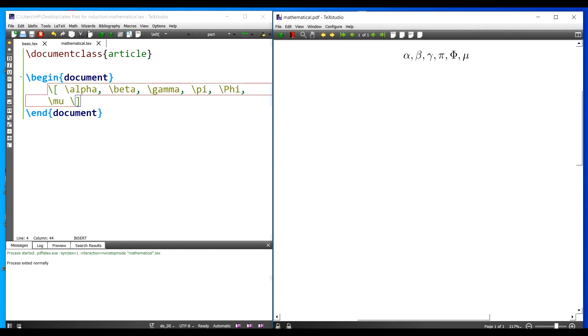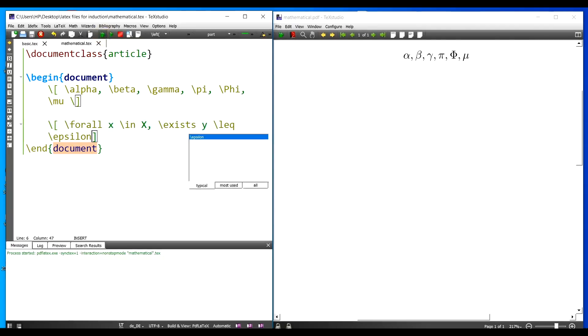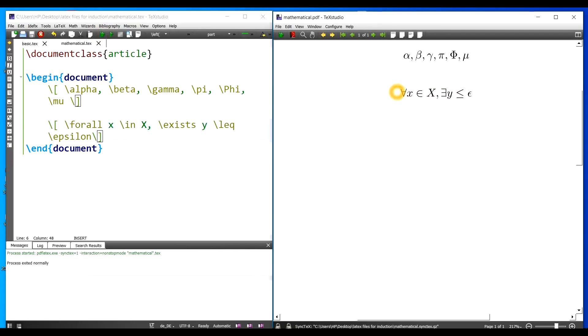So you get the Greek symbols as the output. Let me write some mathematical expression. Suppose I need to write slash for all x in X. There exists, so I am writing slash exists. The commands are not very far from what we actually want. Less than equal to slash less than E Q, y less than equal to epsilon. So for all x in X exists, less than equal to properly aligned epsilon. These are mathematical commands which are available in the help menu whenever you require them.